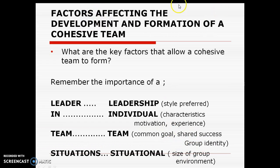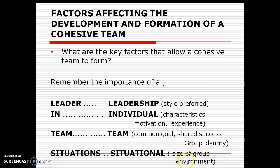So those are all factors affecting the development and formation of a cohesive team. That is your heading — that's the exam question. These are the categories, and from within the categories, we have the style preferred for leadership, and motivation for individual. Make sure you've got three separate points in your Cornell notes for the team category and two for situational. This could be a six-mark question, therefore four categories alone are not enough.